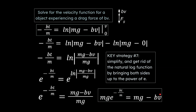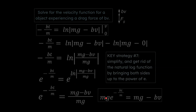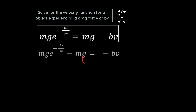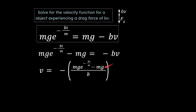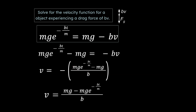Continuing with algebra to get v by itself: we bring mg over to the right side, then subtract mg to isolate the bv term, then take care of the negative b by dividing and distributing the negative. That negative gets distributed in and you end up with the velocity function as your answer. You get a function as an answer.